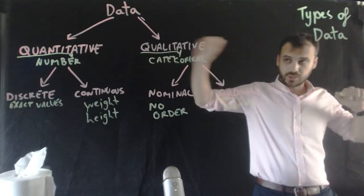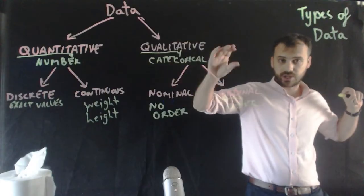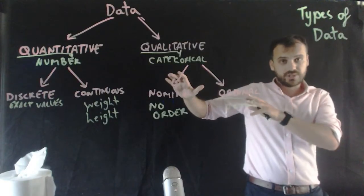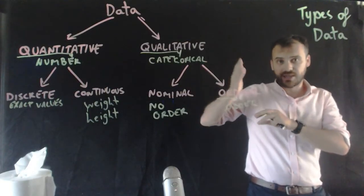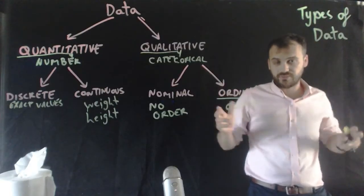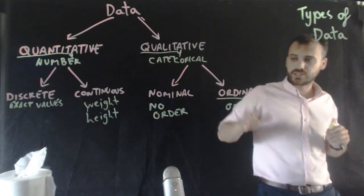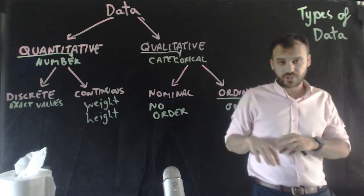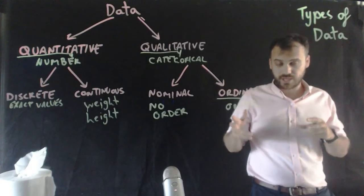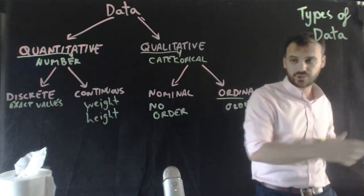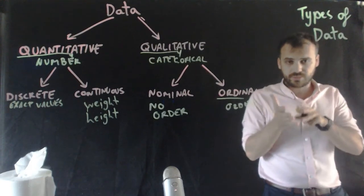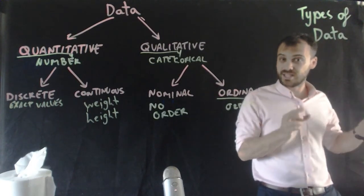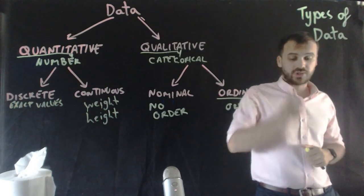Okay, so this is data. Quantitative or qualitative, numbers or categorical. Discrete or continuous, so the numbers can either be exact values or continuous, an infinite number of values. Qualitative, nominal, either no order - black hair, brown hair, red hair, cars, red, yellow, green, blue - or ordinal, some sort of categories, but they're in an order. Types of data.